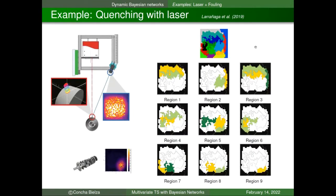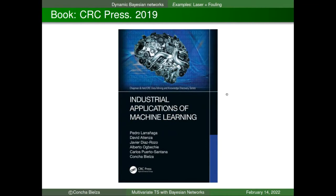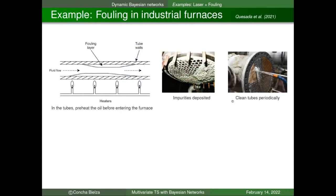We can inspect the learned structure: for a region in yellow we see parents within the same time slice and parents from the previous time slice. By looking at the conditional probability tables we can model how the laser spot moves and use this for anomaly detection. This example is published in a CRC book about industrial applications for machine learning. Another industry example involves fouling in industrial furnaces, where oil must be preheated and chemical impurities are deposited, requiring periodic cleaning of tubes by operators.